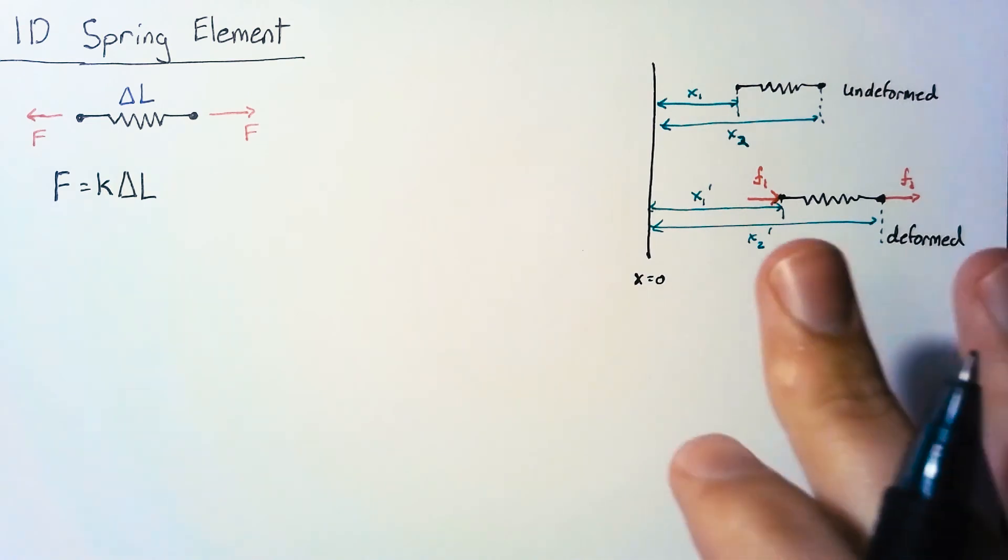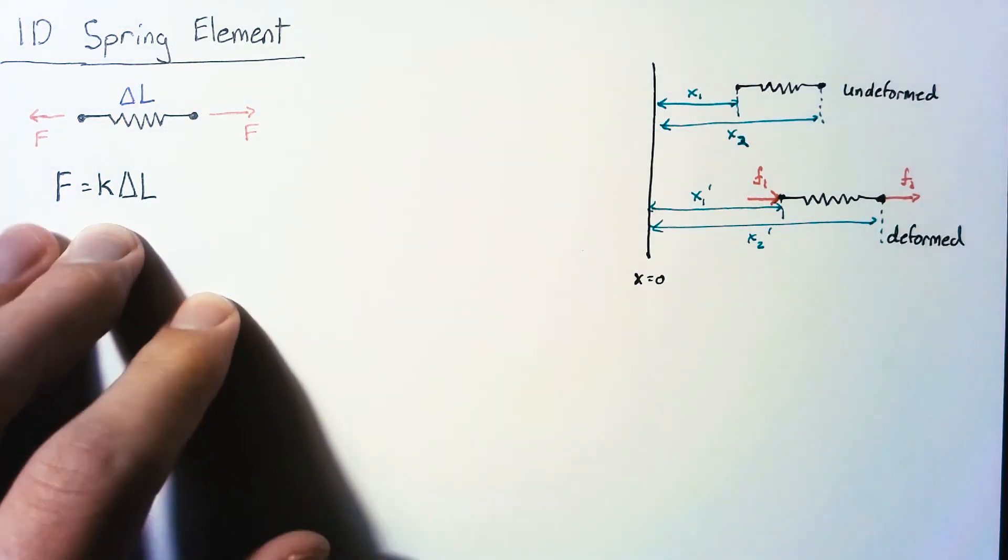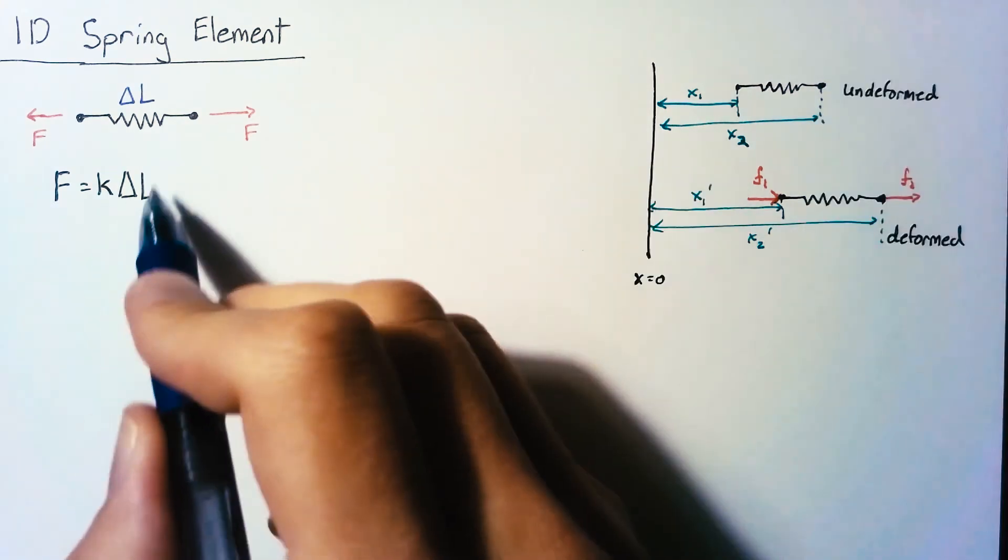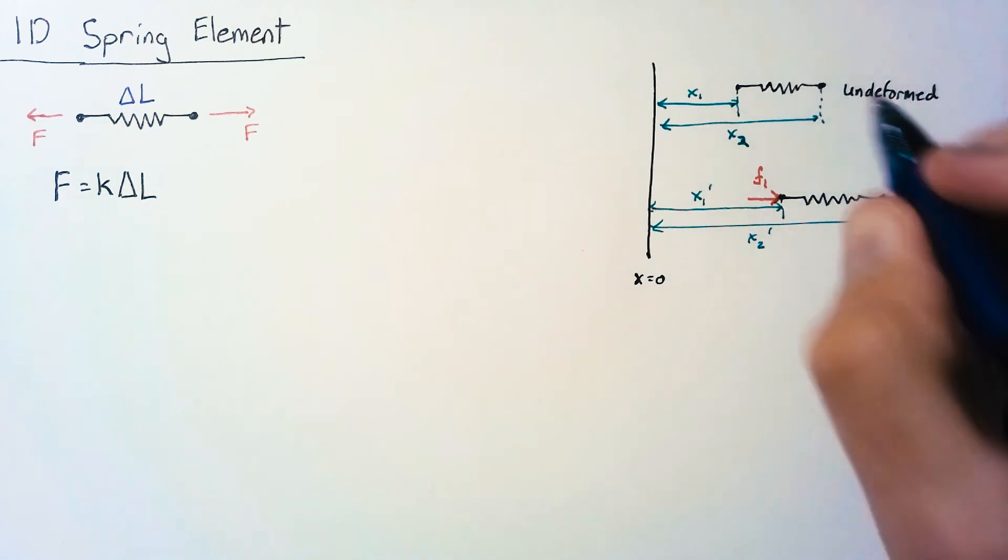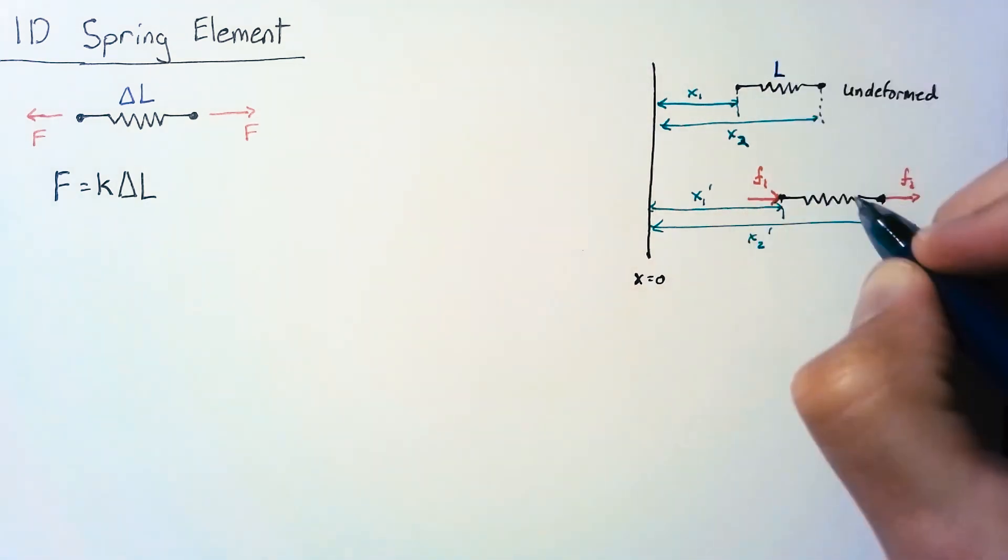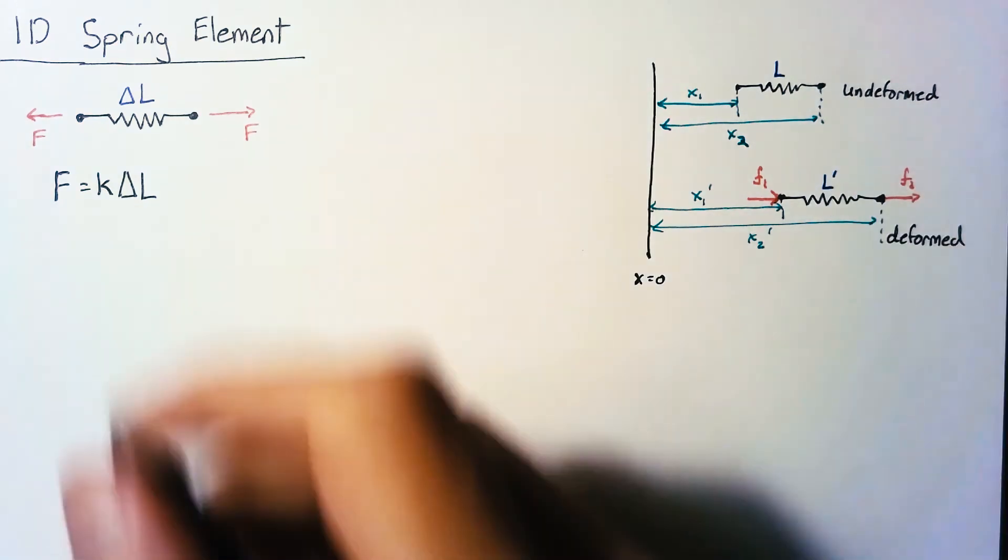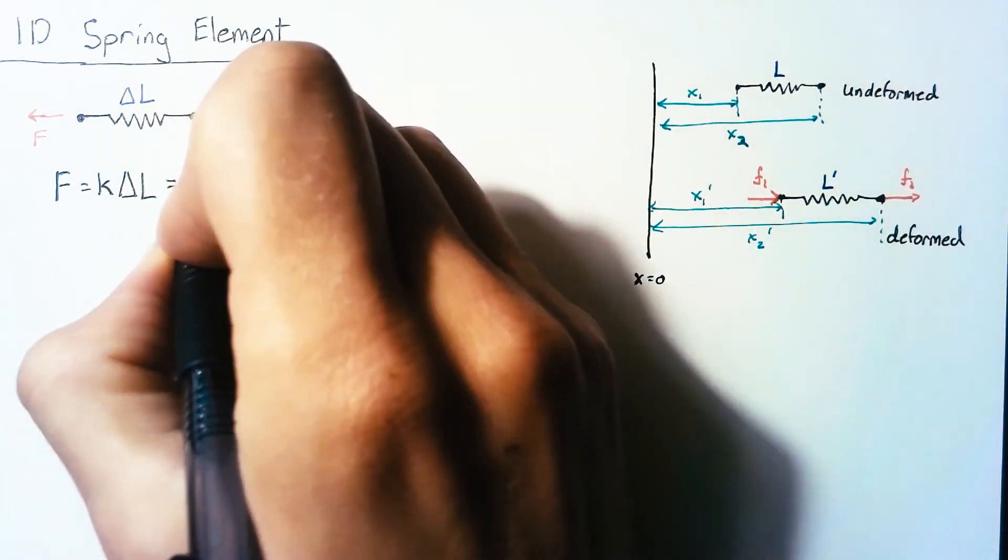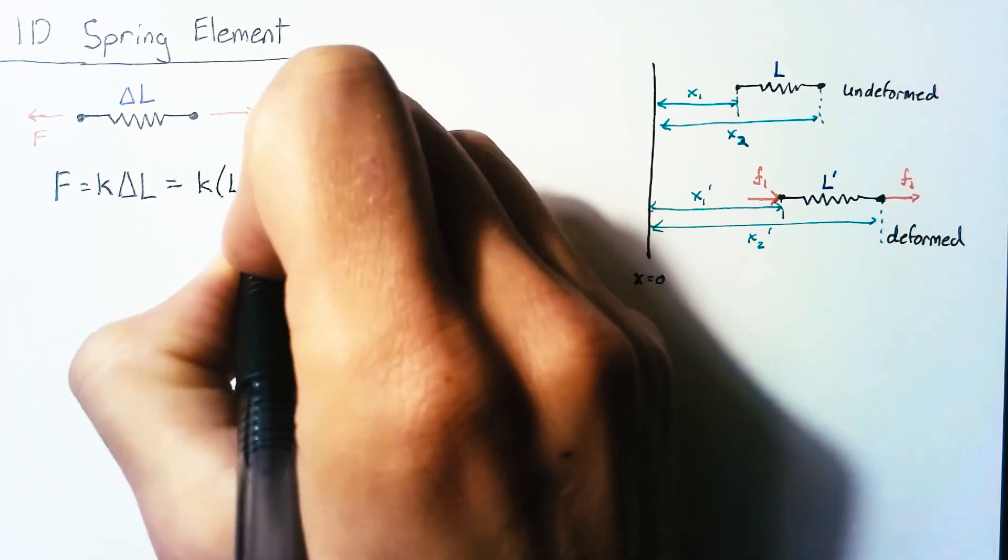Now let's use this geometry to expand our equation for a spring. To start off we need the length of these two elements because we need to see the change between them. We're going to define l and l prime as the undeformed and deformed lengths. Putting that into the equation we end up with k multiplied by l prime minus l.